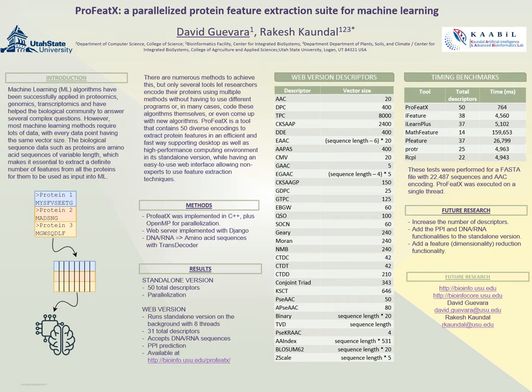We ran benchmarks against other suites, and as you can see, ProFitX has the highest number of descriptors — 50 — while the second-best has 38. ProFitX is also the fastest by more than six times compared to the second fastest suite.